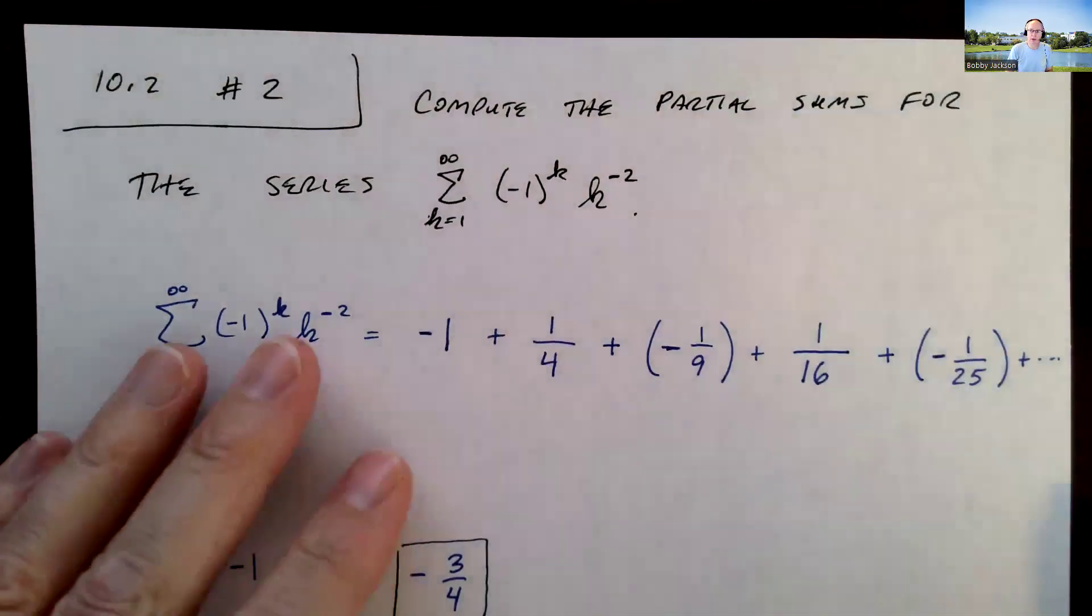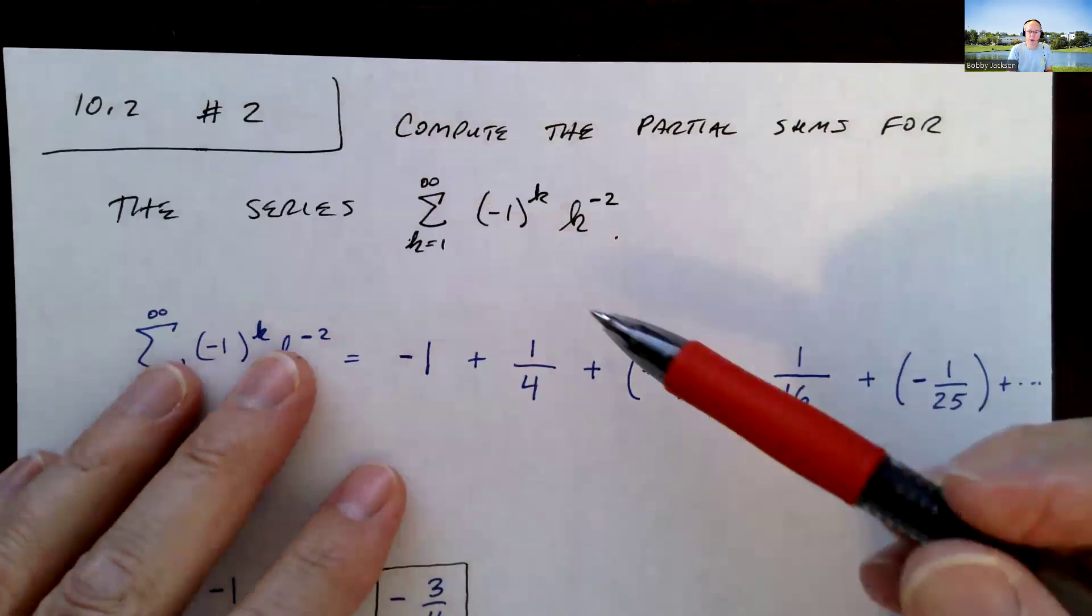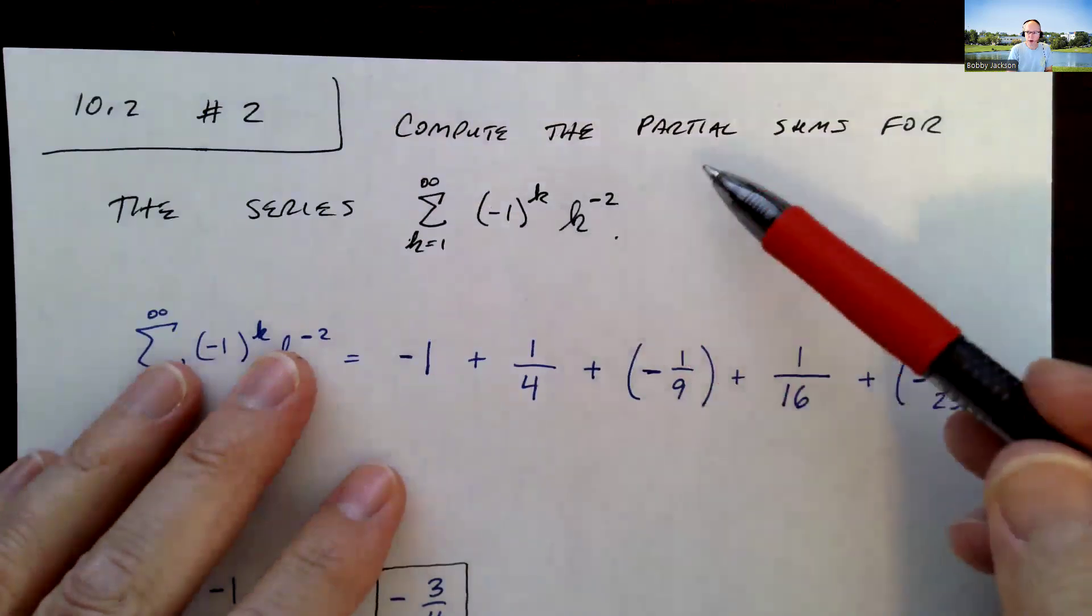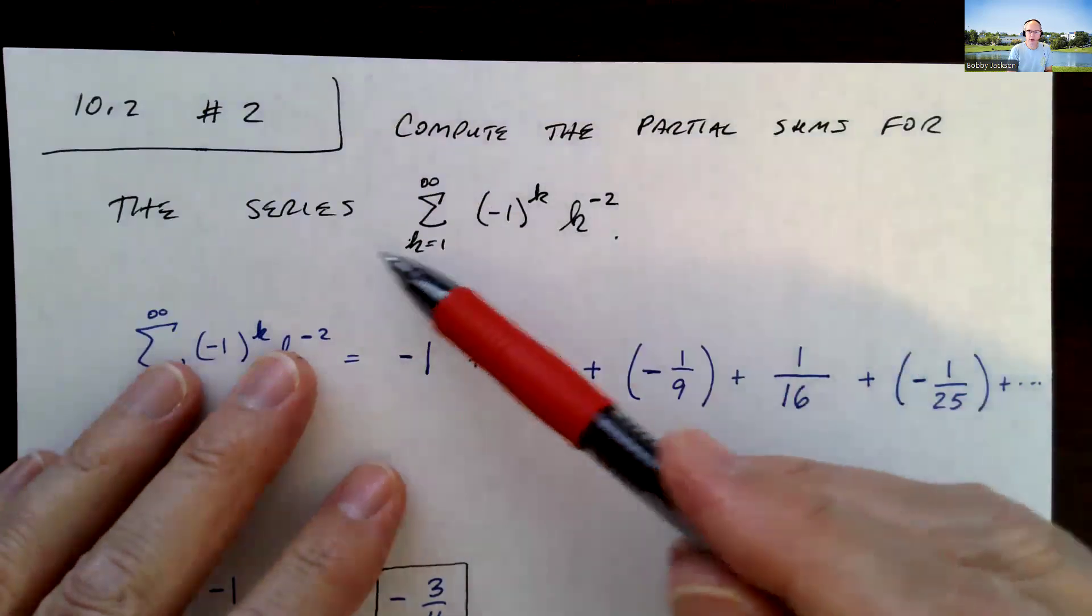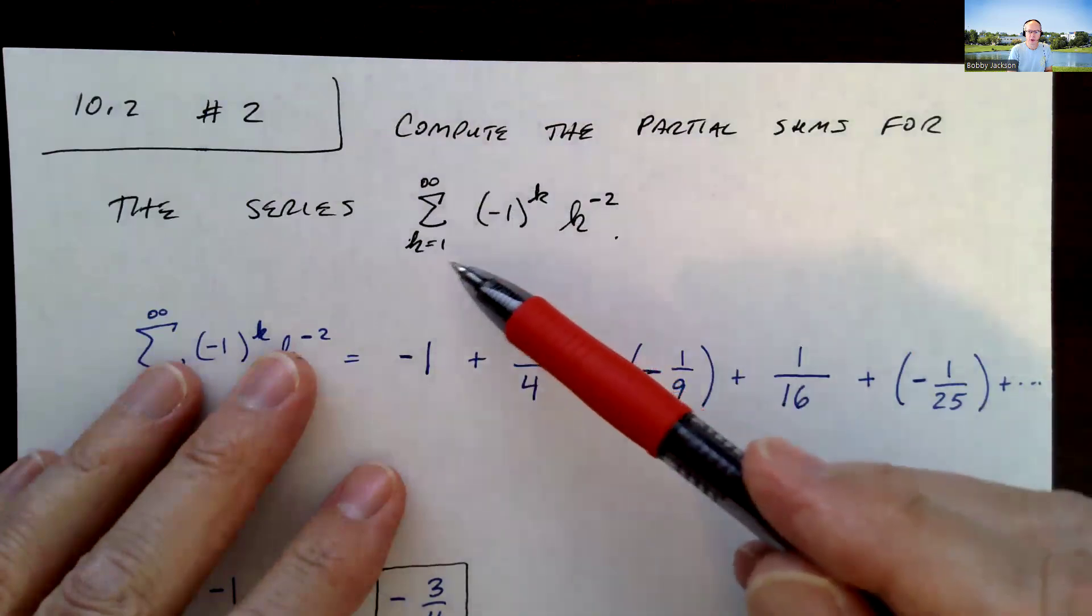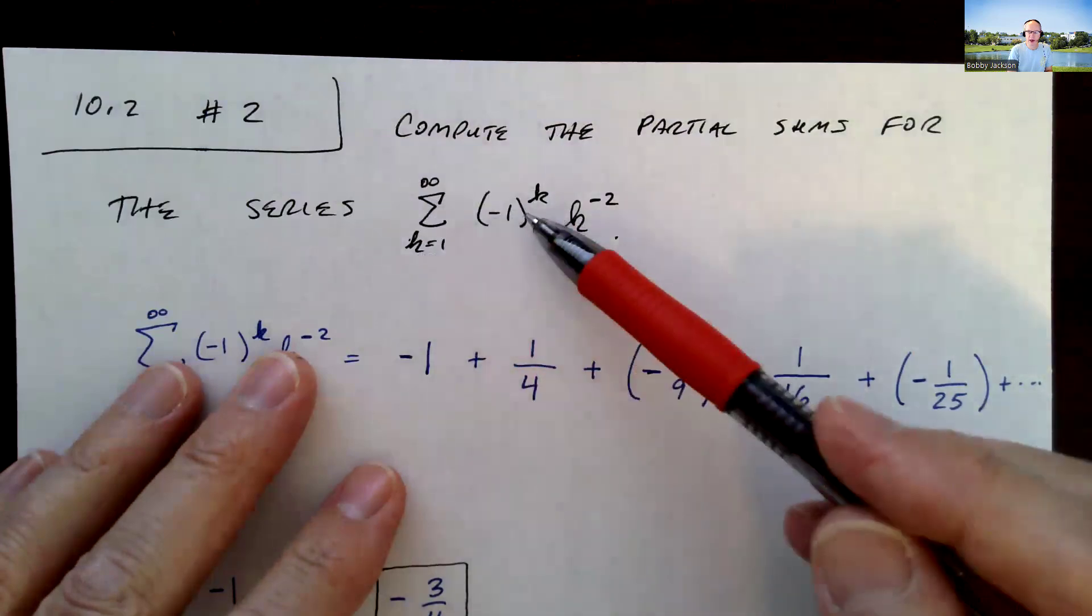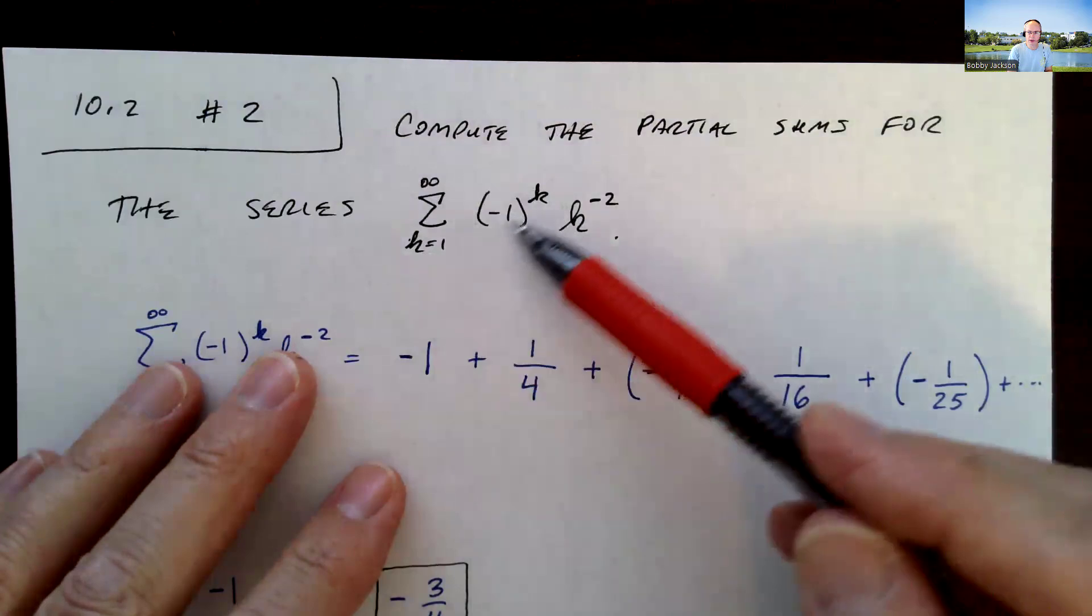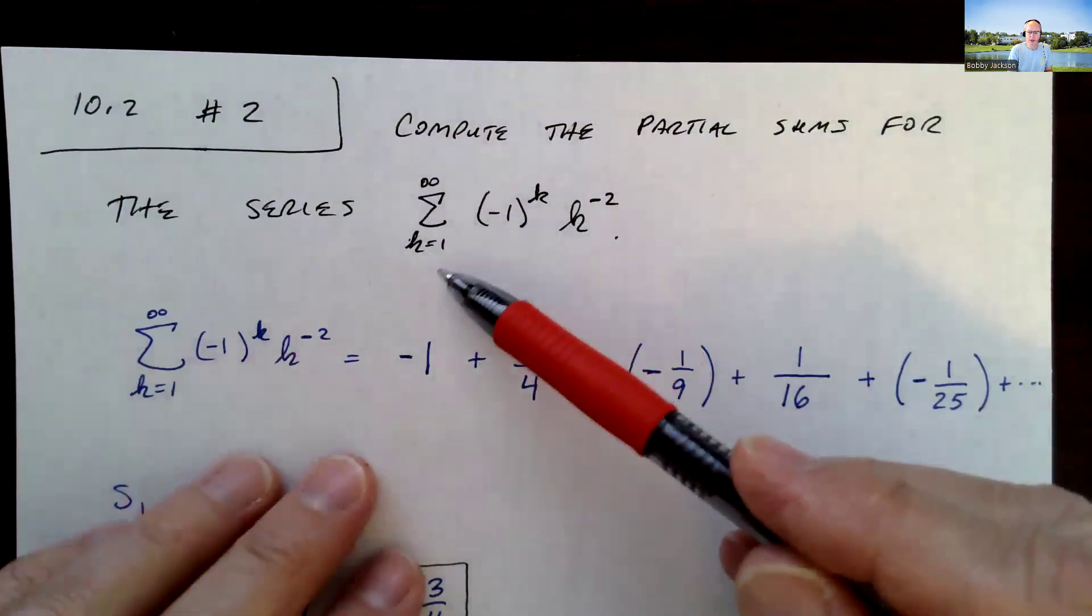Hey everyone, let's take a look at number two here in section 10.2. We're going to compute the partial sums for this series. Notice they're using the index k. I know we use n a lot, but that's okay. We can change that around a little bit.